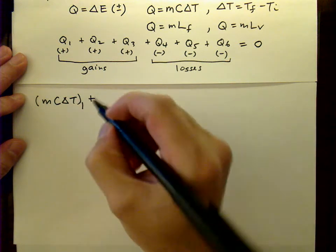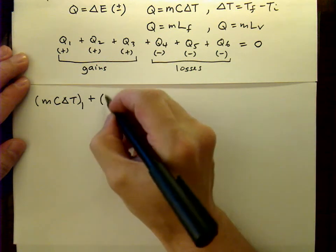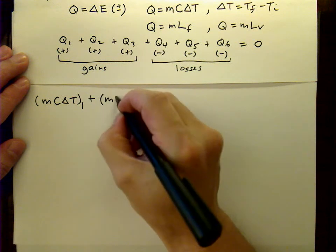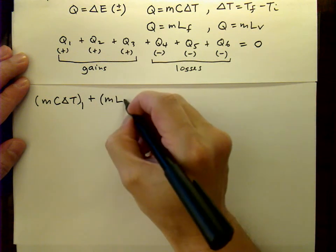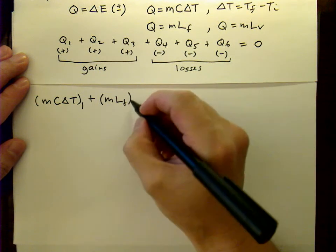For Q2, once the ice is at zero degrees C, it starts to melt. And there is a latent heat of melting there, or fusion.